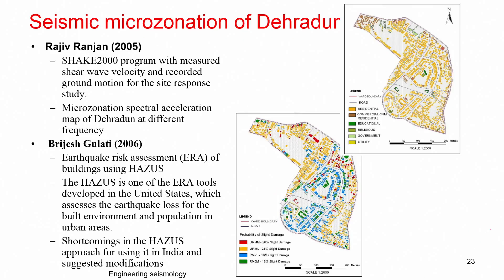Raju and Ranjan did extensive MASW studies and used the site response package SHAKE — a commercial program available to estimate amplification — to get the amplification at different locations in Dehradun city. They mapped the variation of shear wave velocity and spectral acceleration for Dehradun. Further, Brijesh carried out earthquake risk assessment of Dehradun using the HAZUS program developed by FEMA in the USA.